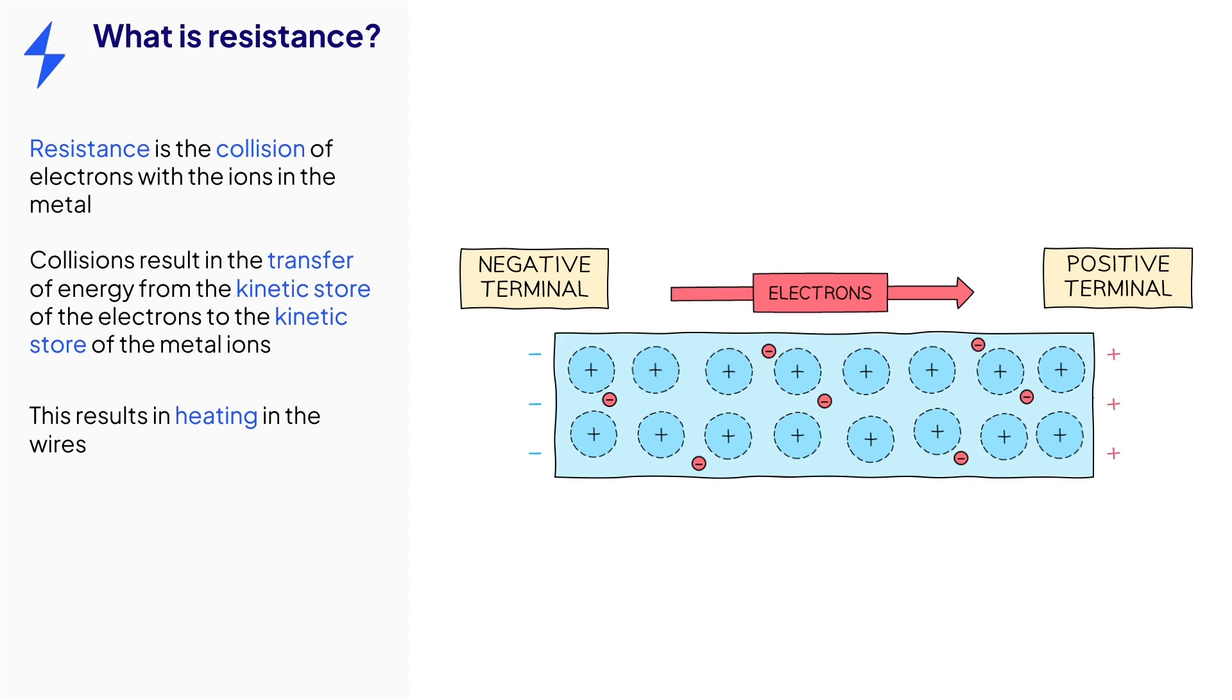As the temperature in the wire increases, the metal ions vibrate faster, resulting in more and more collisions, which further increases resistance, which further increases temperature, and so on.